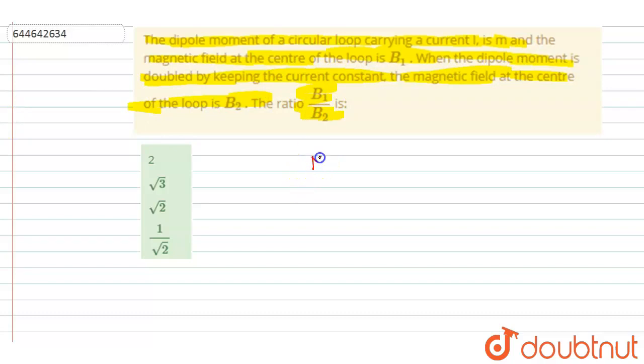If I write down the magnetic moment, we know that it is equal to IA. If the number of turns is 1, then for a circular loop, we know that the area is πr². So you can write M = Iπr².